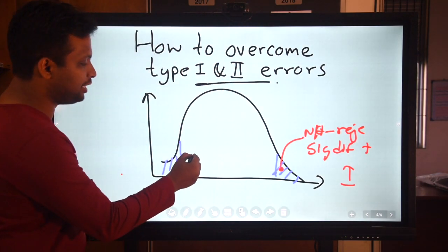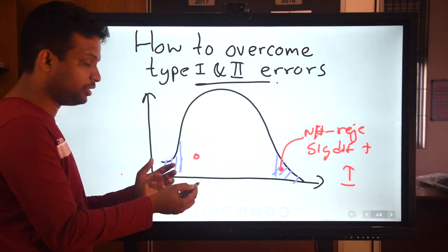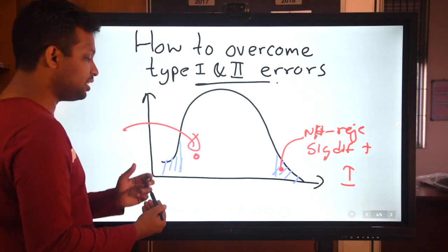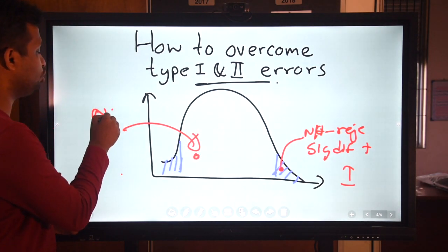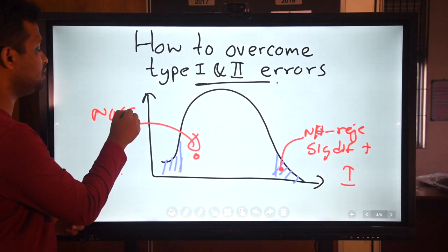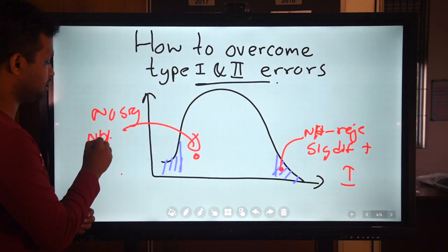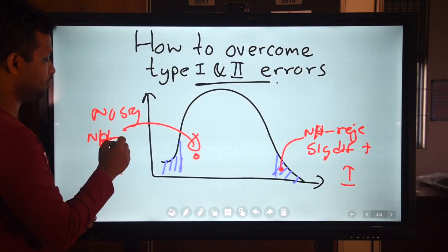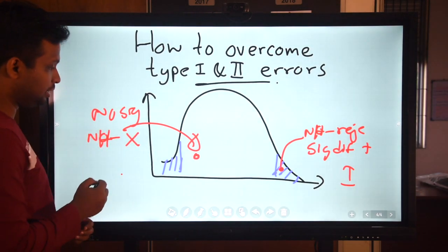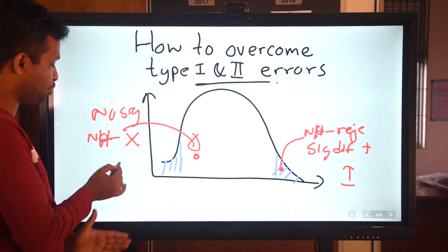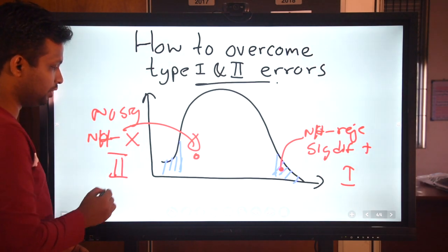The other possibility is we have classified a sample value as not significantly different — not significant — so the null hypothesis cannot be rejected, but this conclusion is wrong. That is Type 2 error.